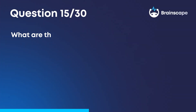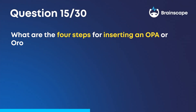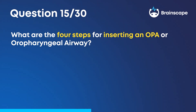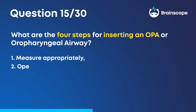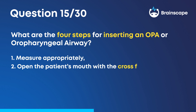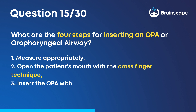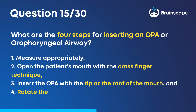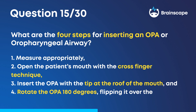Question 15. What are the four steps for inserting an OPA or oropharyngeal airway? One, measure appropriately. Two, open the patient's mouth with the cross-finger technique. Three, insert the OPA with the tip at the roof of the mouth. And four, rotate the OPA 180 degrees, flipping it over the tongue.